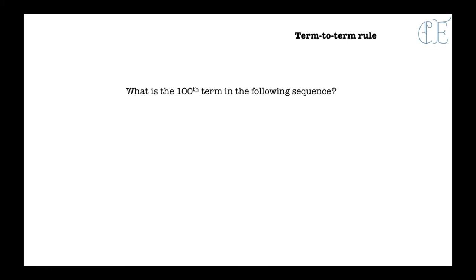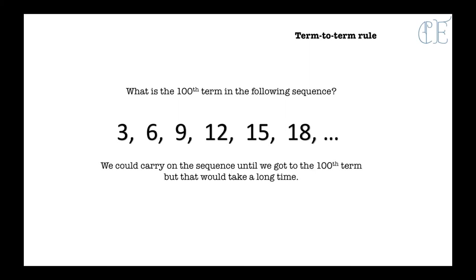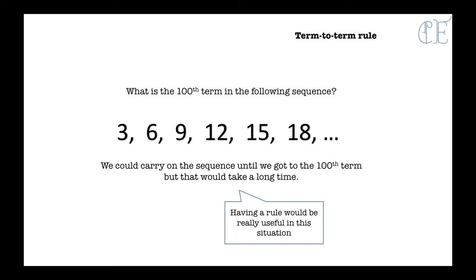What we need to do though is — let's say we were asked what is the 100th term in the following sequence. We have the same sequence and we want to know what the 100th term is. We could carry on the sequence until we got to 100 by adding 3 each time, but that would take quite a while. So having a rule would be really useful, and we need to use the term to term rule. This is called finding the nth term, or the nth term rule.